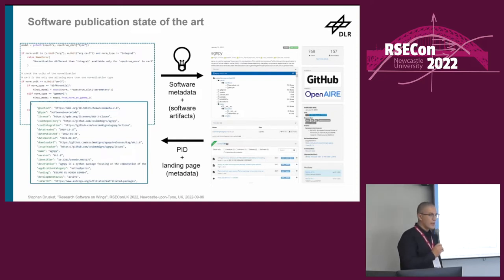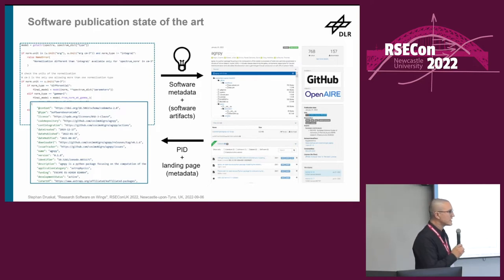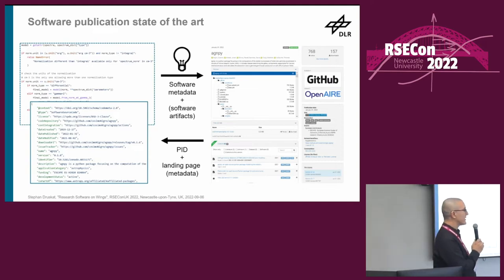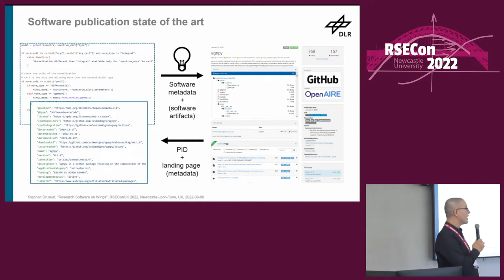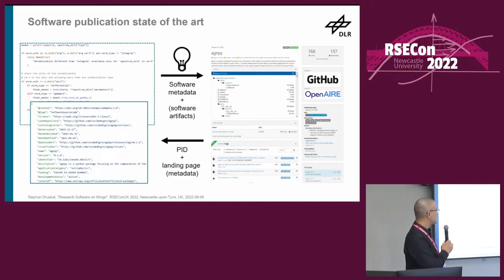What does software publication actually look like today? We are already in a pretty good place. What we understand as software publication is: you take the metadata describing the software and, if it's open source, you also take the software artifacts — source code, binaries, etc. You push them to a target publication repository such as Zenodo, and what you get back is a persistent identifier, usually a DOI for the software version you publish. Sometimes you also get a concept DOI for the software product as a whole, and usually a landing page with the metadata embedded so users can assess the software.